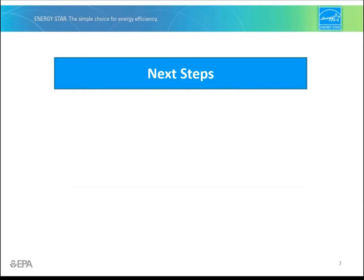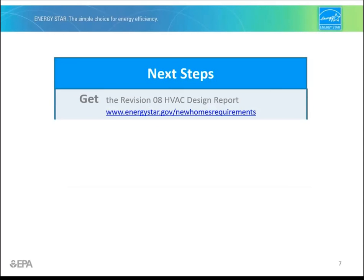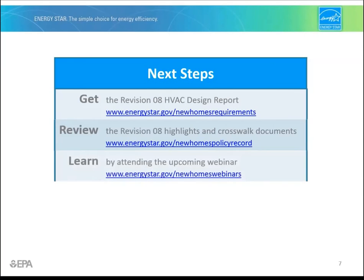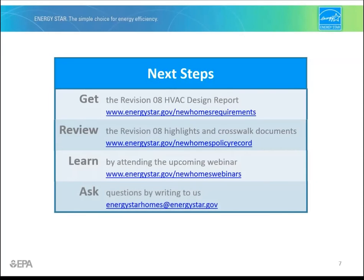Now let's talk about next steps. Get the HVAC design report by downloading it from EPA's website. Review the Revision 8 highlights document and crosswalk documents to better understand what has changed. Most importantly, attend an upcoming webinar — there's much more to learn about Revision 8 — and ask questions by writing to us. Thanks for watching and for your support of the ENERGY STAR program.